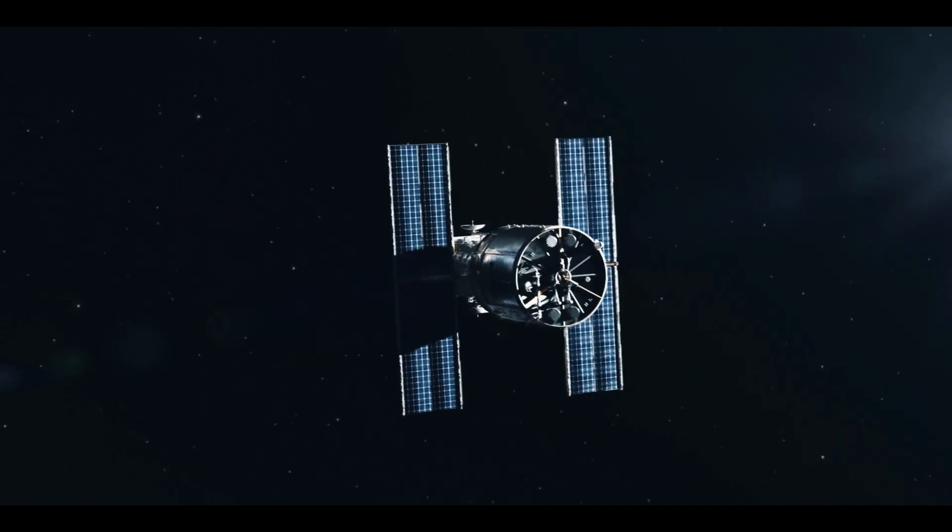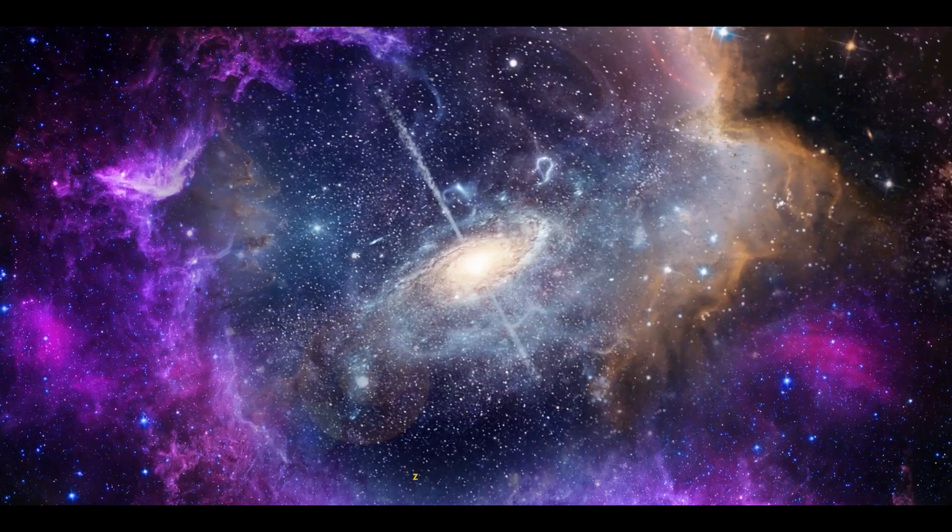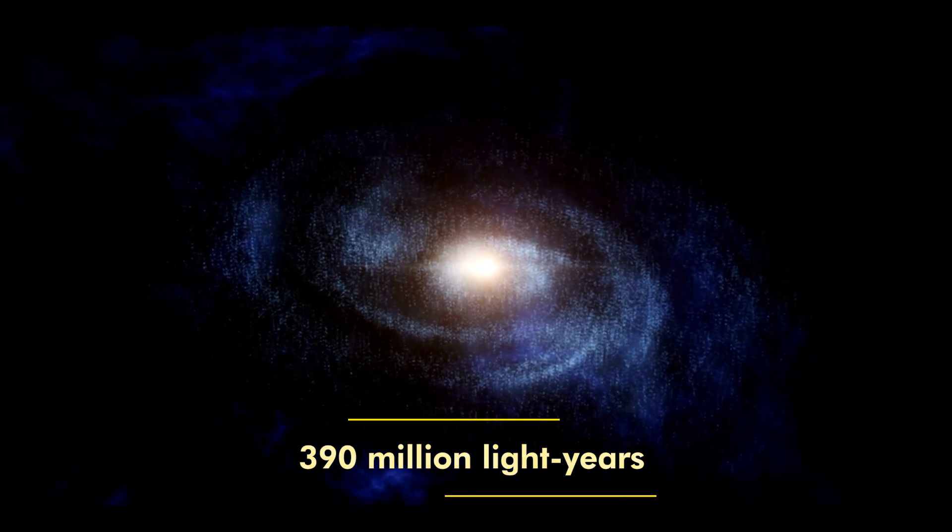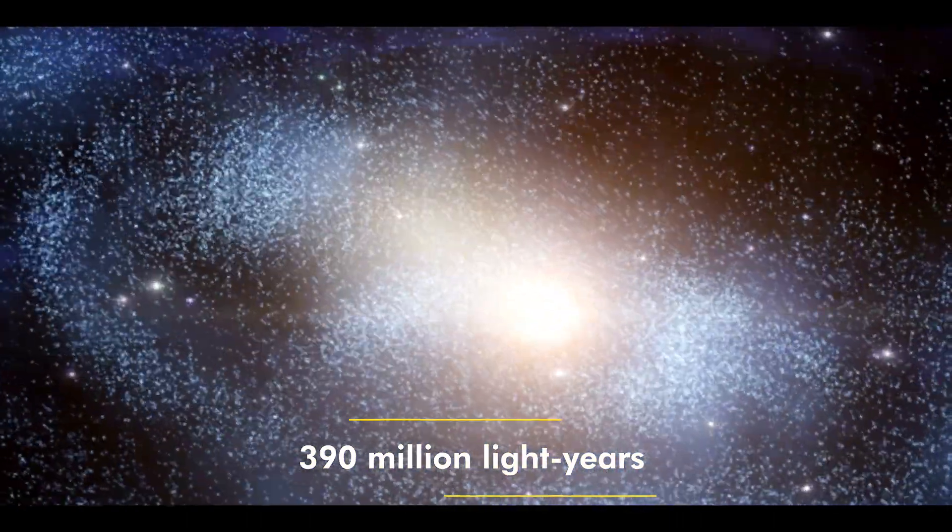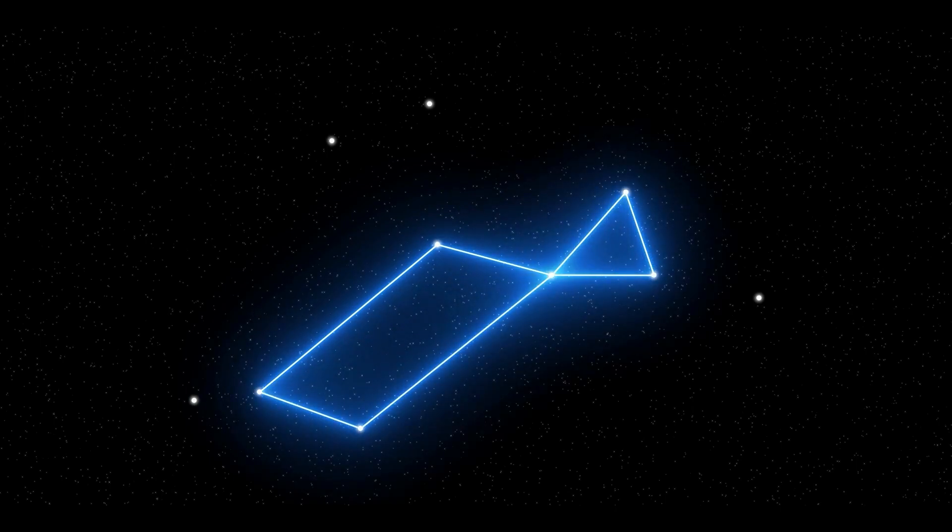NASA's Hubble Space Telescope captured a series of images of a celestial object, Z229-15, that lives about 390 million light-years away from Earth. The celestial object can be found in the constellation Lyra.